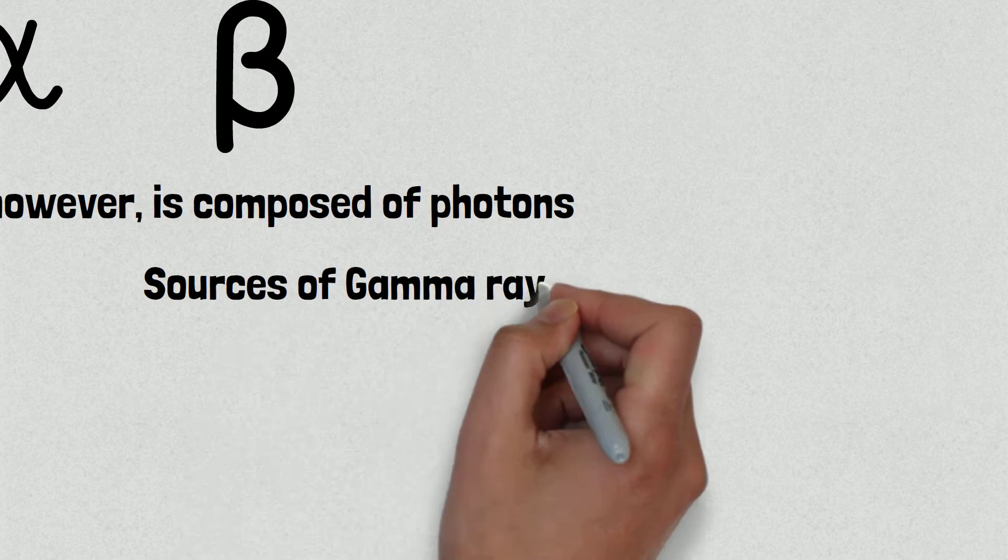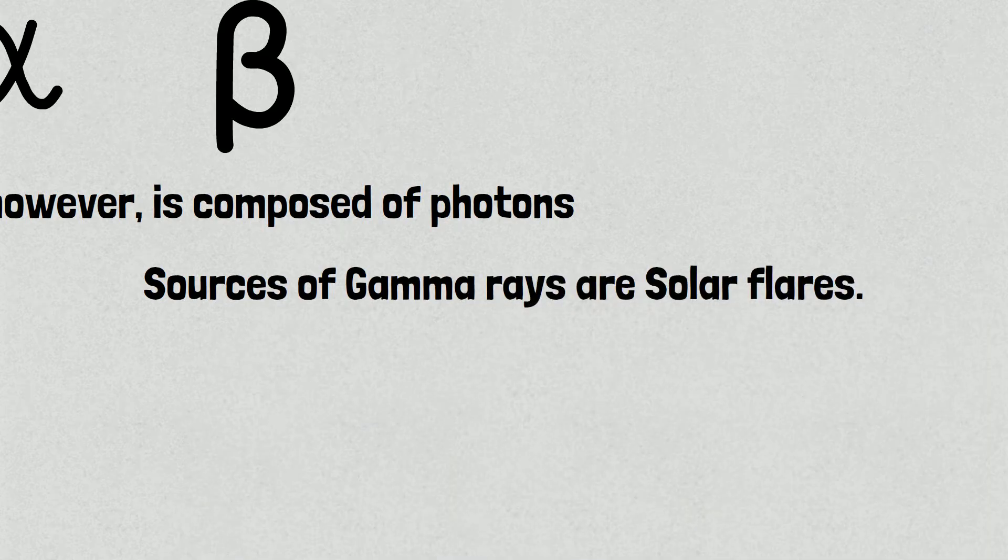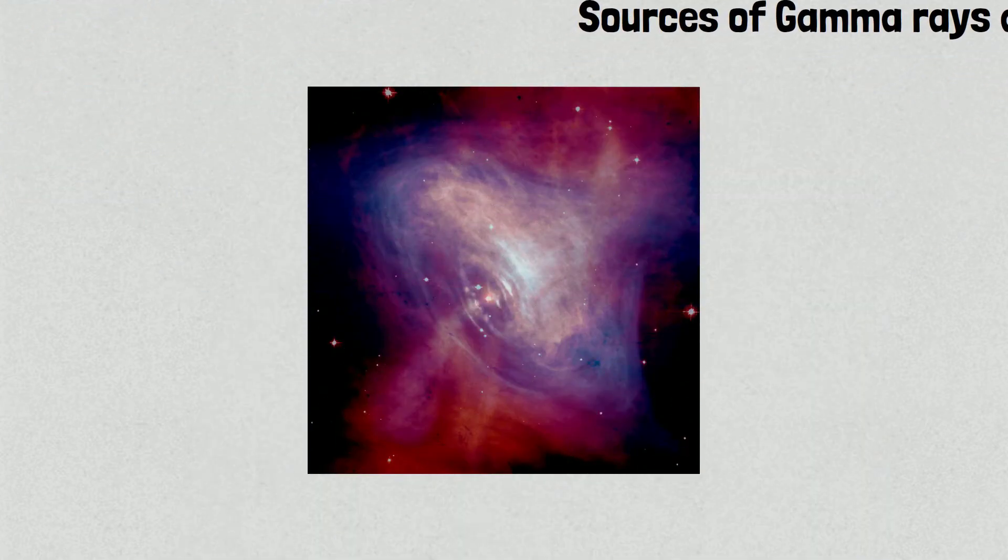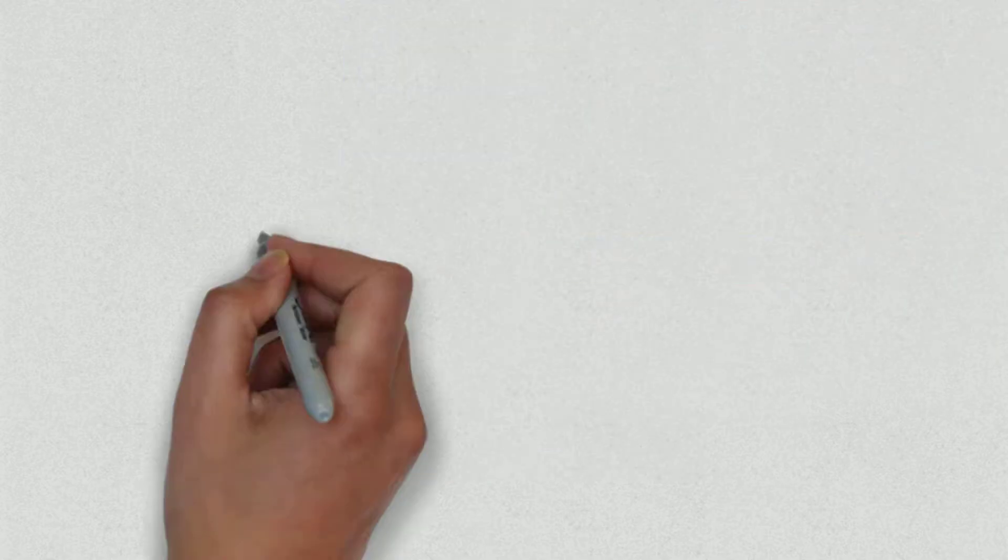Some sources of gamma rays are solar flares - the first confident observation occurred in 1972 - pulsars and magnetars. The gamma ray sky is dominated by the more common and longer-term production of gamma rays that emanate from pulsars within the Milky Way. Sources from the rest of the sky are mostly quasars.